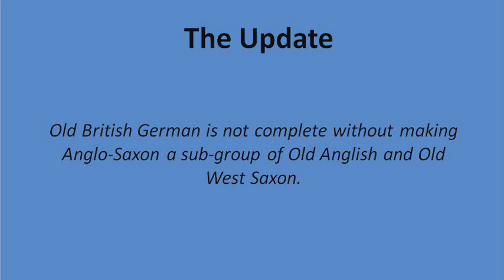So the update or revision — I do have an earlier video introducing this idea — is that Old British German is not complete without making Anglo-Saxon a subgroup of Old Anglish and Old West Saxon. Why Old Anglish instead of Old Anglian? Well, let's keep it Germanic. And wording it this way puts the center on dialectology and speech varieties — languages in their own right.